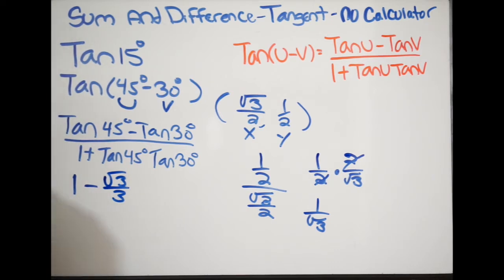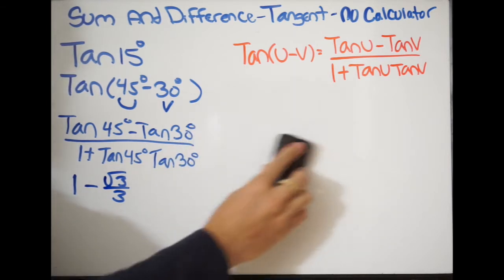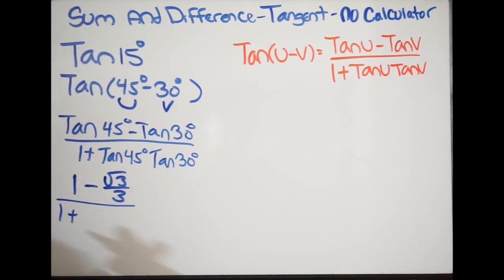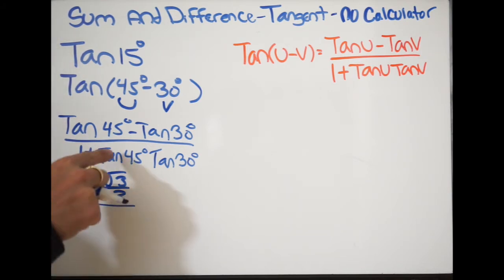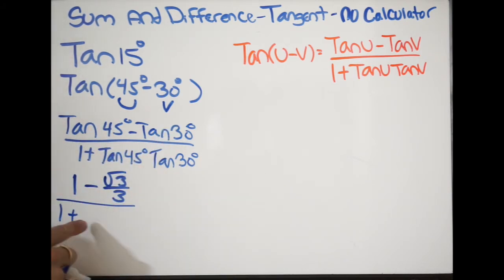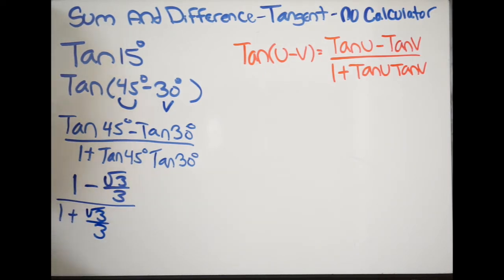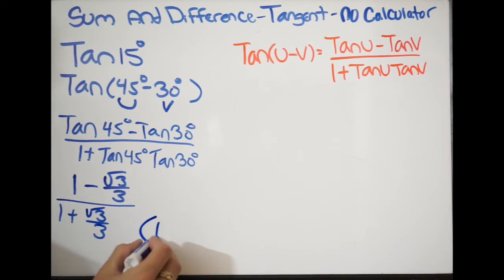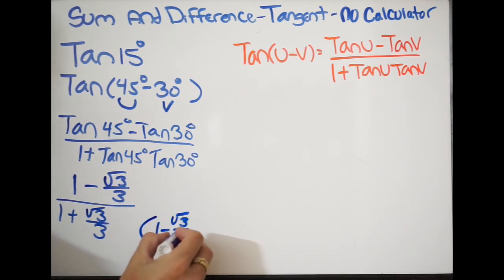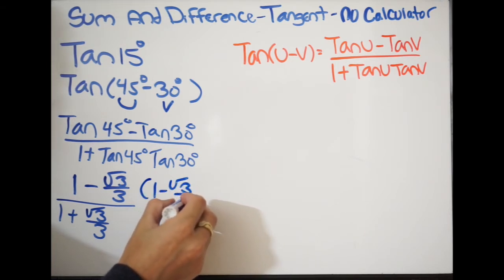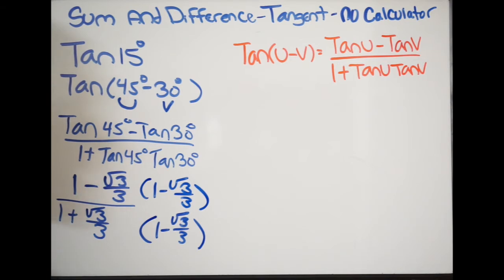Now we have all the information we need. Working on the denominator, we get 1 plus tangent of 45 — which is 1, so 1 times anything is itself — times tangent of 30 degrees, which is square root of 3 over 3. To get rid of the square root in the denominator, we multiply by the conjugate, which is 1 minus square root of 3 over 3, doing that to both the numerator and denominator.